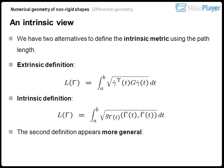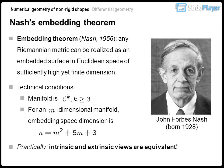The second definition appears more general. Nash's Embedding Theorem (Nash, 1956): any Riemannian metric can be realized as an embedded surface in Euclidean space of sufficiently high yet finite dimension. Technical conditions: for a d-dimensional manifold, the embedding space dimension is finite. Practically, intrinsic and extrinsic views are equivalent. John Forbes Nash, born 1928.